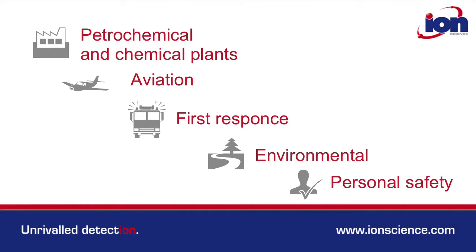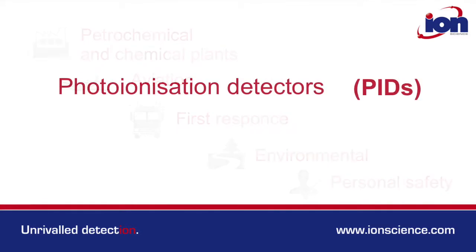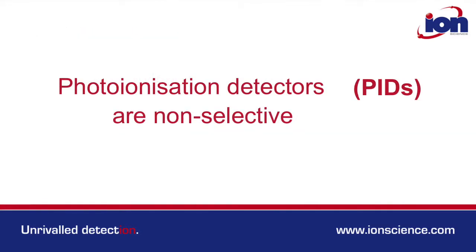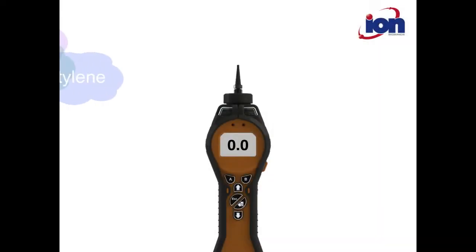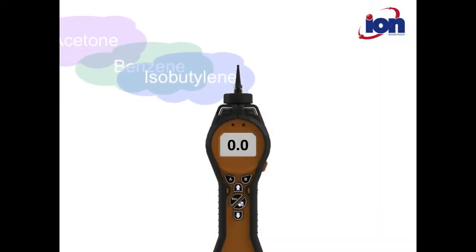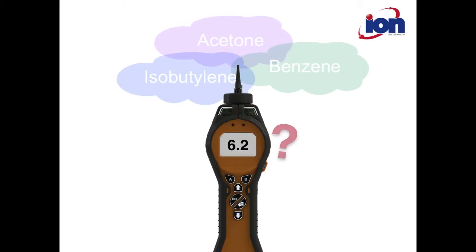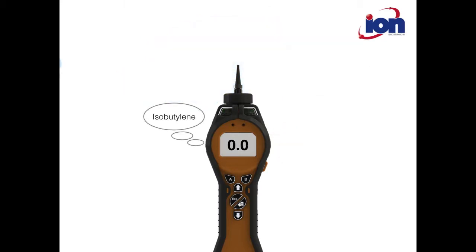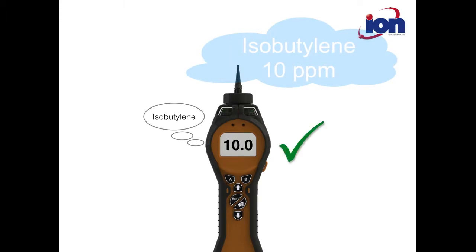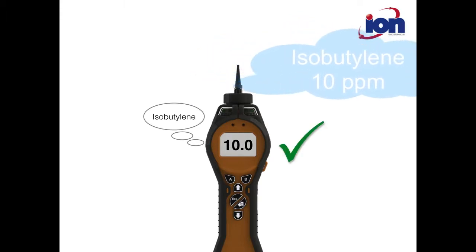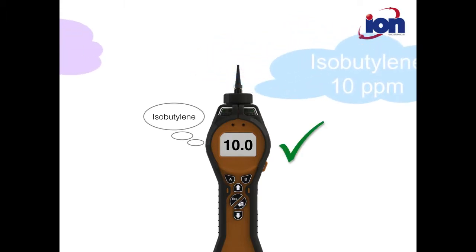For all these great features, PID is non-selective — it can't differentiate between the gases it detects. The detectability of PID towards gases also varies; for example, a concentration of one gas may give a different response to the same concentration of another.